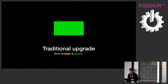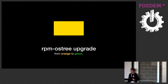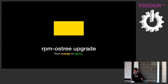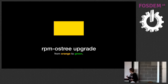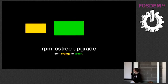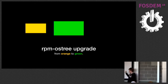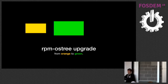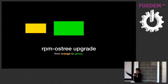With a traditional upgrade, packages update one by one, modifying the system underneath — and if something breaks in the middle, you can end up in a weird state. But with rpm-ostree, used by Silverblue and CoreOS, you download a new image on the side and just reboot into it, leaving much less room for things to go wrong.